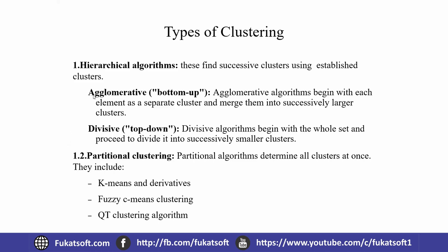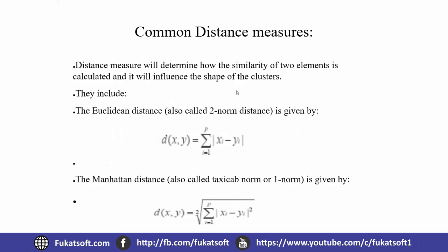Types of clustering algorithms include hierarchical clustering and partitional clustering. Hierarchical clustering uses bottom-up (agglomerative) and top-down (divisive) approaches. Partitional clustering includes k-means, fuzzy c-means, and QT clustering. Common distance measures include Euclidean distance and Manhattan distance.